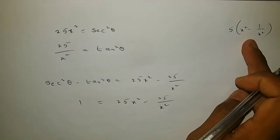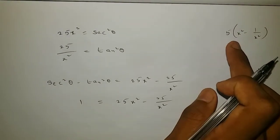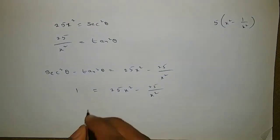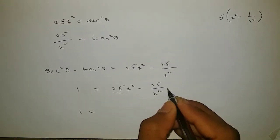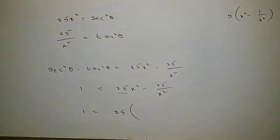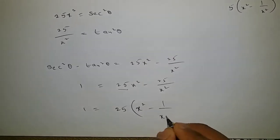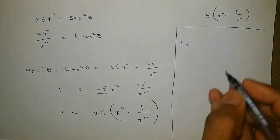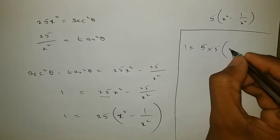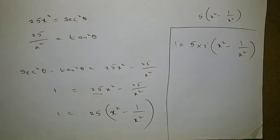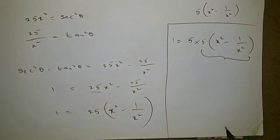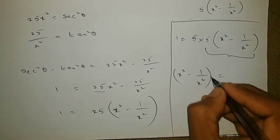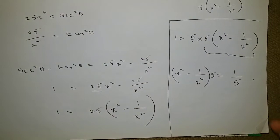So what is being asked exactly? Find the value of 5 times x squared minus 1 by x squared. Here 1 equals f squared times x squared minus f squared by x squared. In the first term f squared is there, in the second term also f squared is there, so take out f squared as common. That remains as f squared times (x squared minus 1 by x squared). Now 1 equals f squared can be written as f times f, so 5 times (x squared minus 1 by x squared). We want the value of 5 times (x squared minus 1 by x squared), so bring 5 to this side. Therefore, (x squared minus 1 by x squared) times 5 equals 1 by 5.